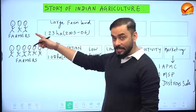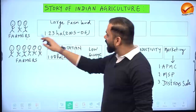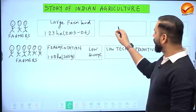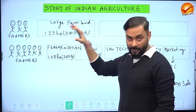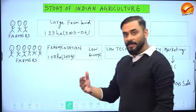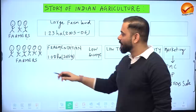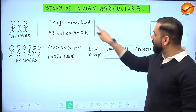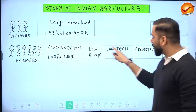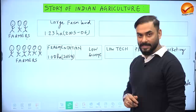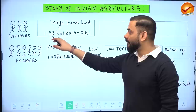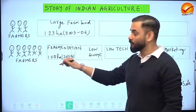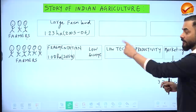Initially, when the population was limited, farmers used to own big pieces of land. The average farm size in 2005-06 was 1.23 hectares. But as India's population kept increasing, the rural farming population also increased, causing land fragmentation. By 2015-16, the average farm size had reduced to 1.08 hectares — meaning the size of the average plot has shrunk over time.